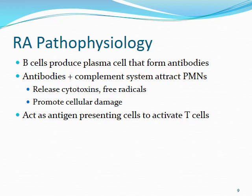B cells produce antibodies — the rheumatoid factors. In conjunction with the complement system, these antibodies attract polymorphonuclear cells like neutrophils. When attracted, these cells attack cellular material, releasing cytotoxins and free radicals that propagate further inflammation and promote cellular damage. The B cells also act as antigen-presenting cells to activate T cells as well.